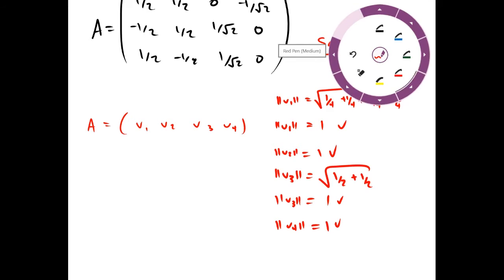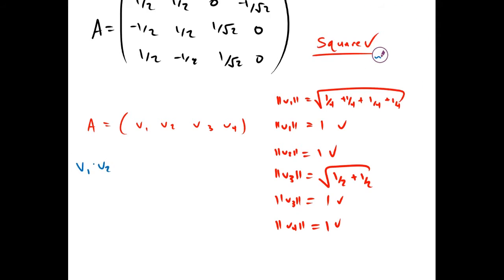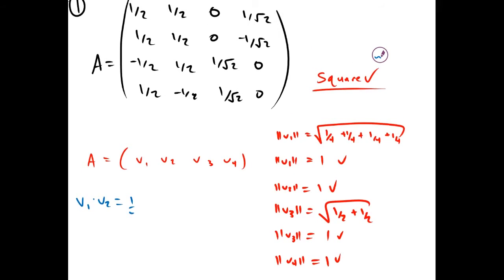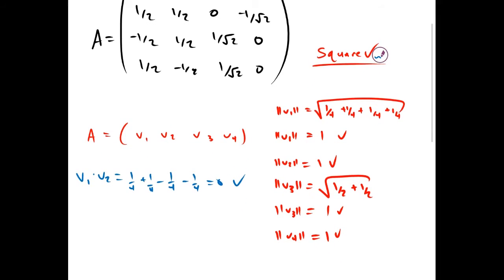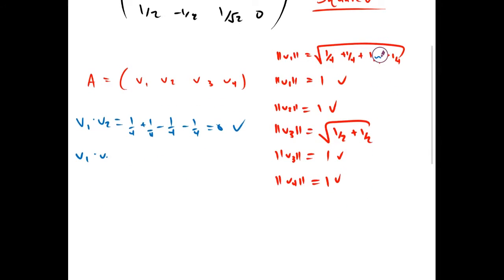Next we need to see if our columns are orthogonal to each other. So we compute v1 dot v2, and we get 1/4 plus 1/4 minus 1/4 minus 1/4, which is 0. So that's good. We're also going to do v1 dot v3, v1 dot v4, v2 dot v3, and v3 dot v4.